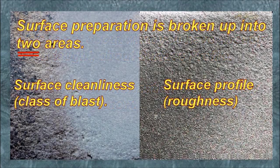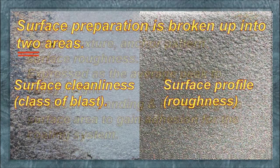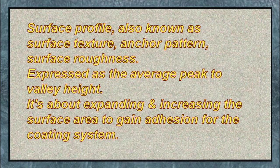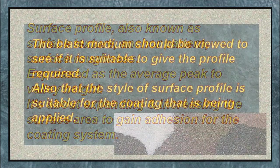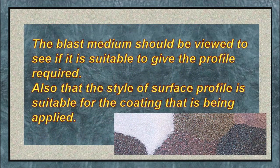Surface preparation is broken up into two areas: surface cleanliness, class of blast, and surface profile roughness. Surface profile — also known as surface texture, anchor pattern, or surface roughness — is expressed as an average peak-to-valley height. It's about expanding and increasing the surface area to gain adhesion for the coating system. The blast medium should be viewed to see if it's suitable to give the profile required, and that the style of surface profile is suitable for the coating being applied.